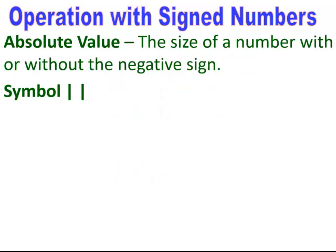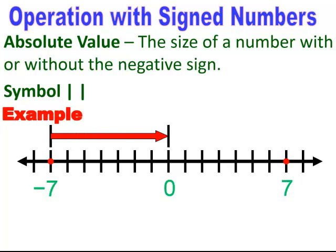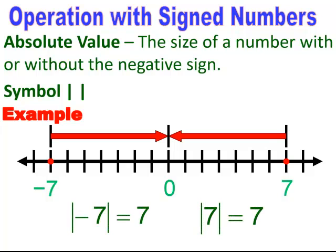The absolute value is the size of a number with or without the negative sign. So if you see this symbol with bars — not parentheses, bars — this is the absolute value. The absolute value gives us the value of the distance for a number, and therefore when we get the absolute value of any number, it will always be a positive value because distance is always positive. So the absolute value of negative seven is positive seven, and the absolute value of positive seven is also positive seven.